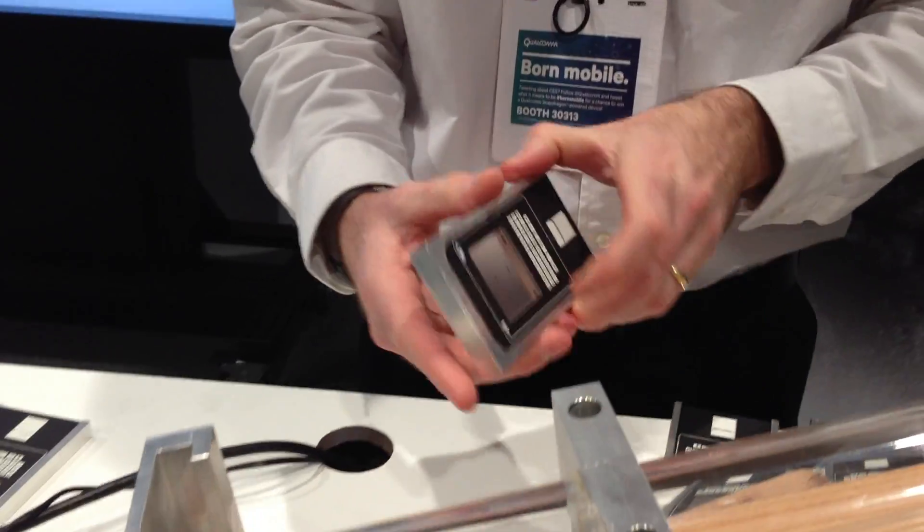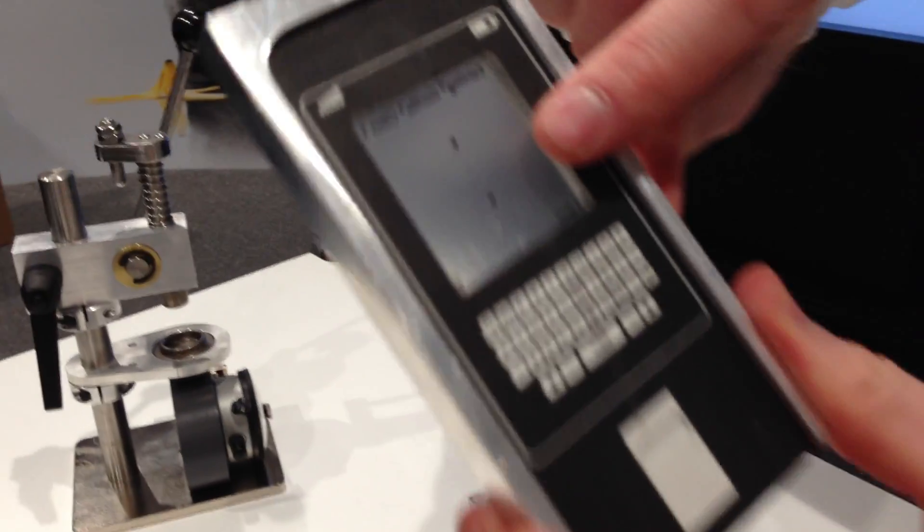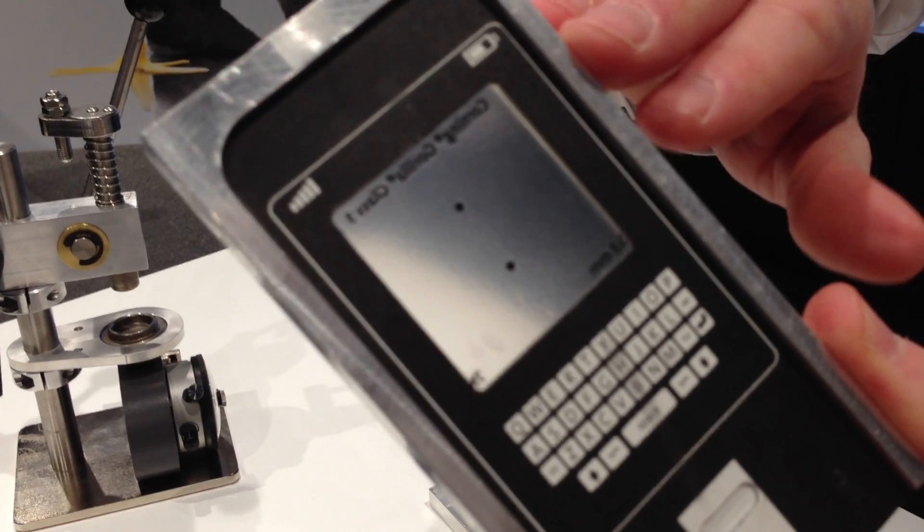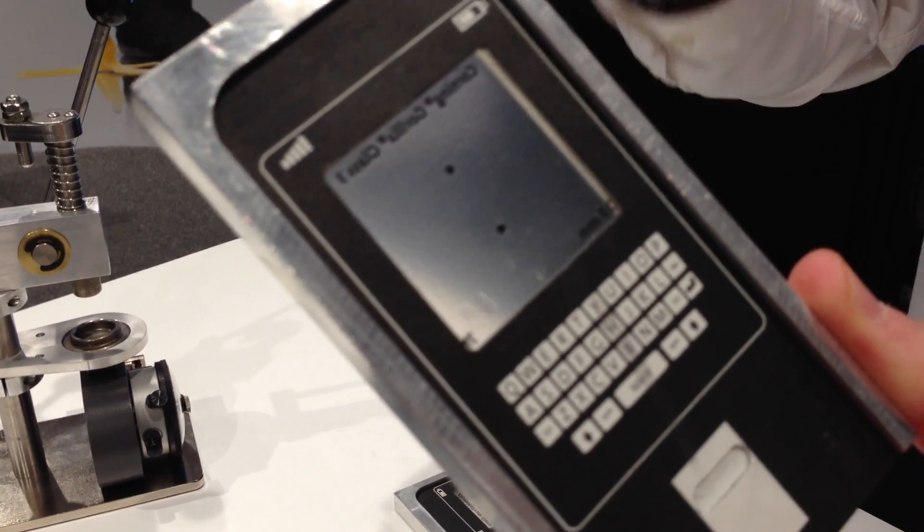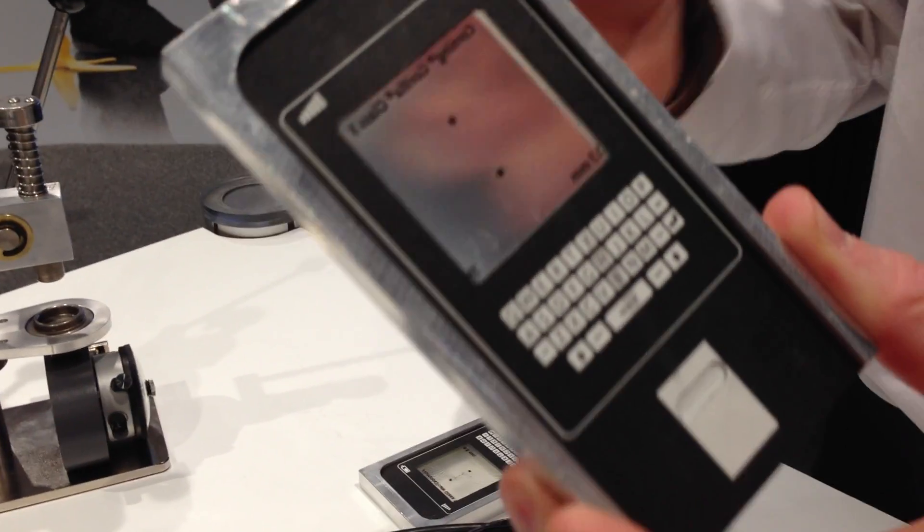Now we're going to compare that to Corning Gorilla Glass 3. You can see we have the same setup. The scratch is much less visible. As Dave described earlier, we've created a feature in the glass where it doesn't create lateral cracks as easily, so it's not as strength limiting.